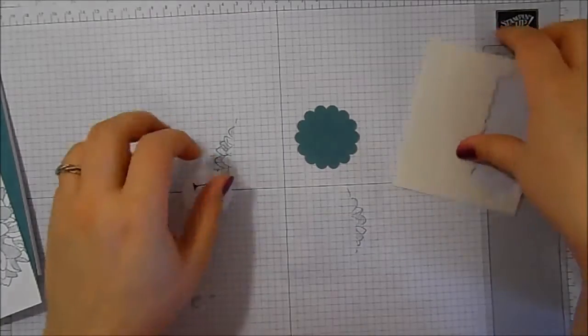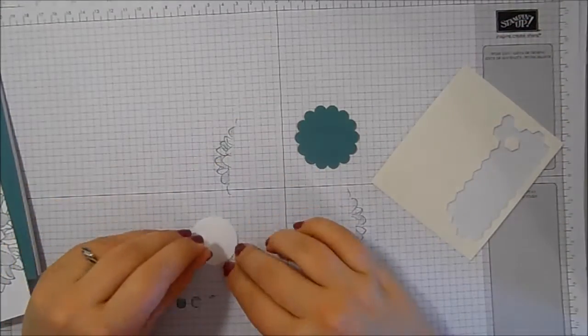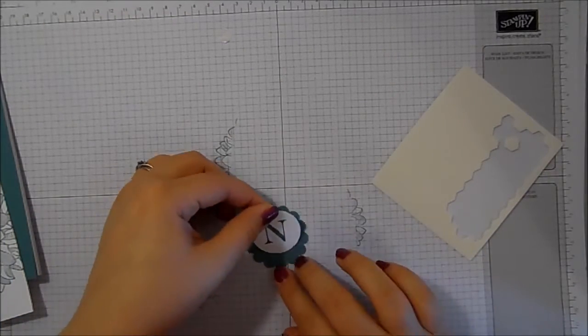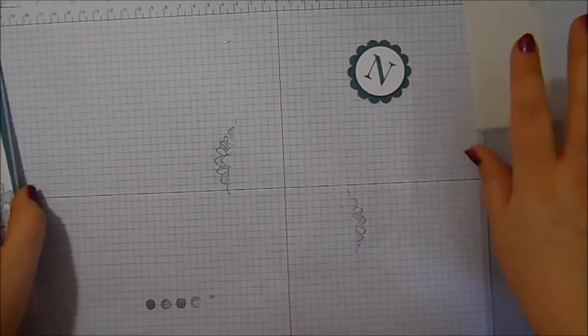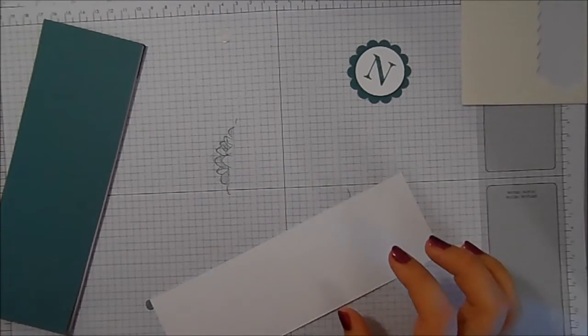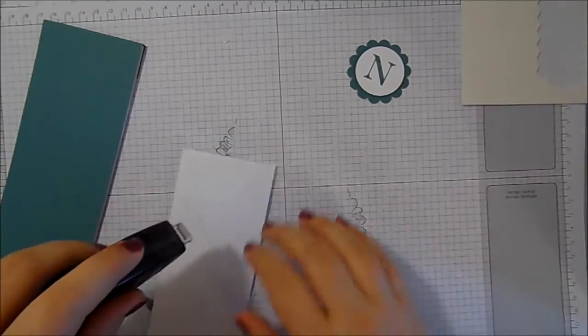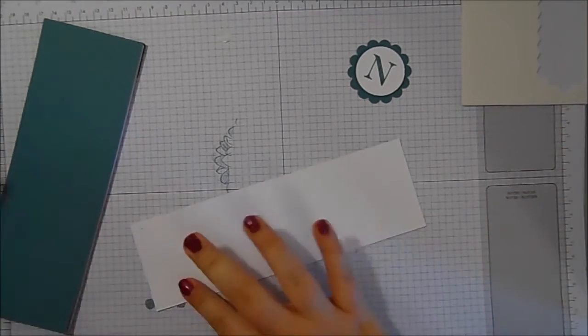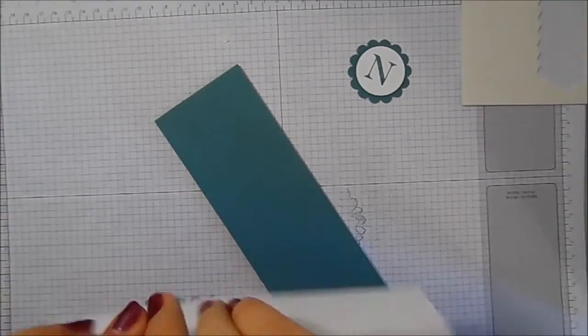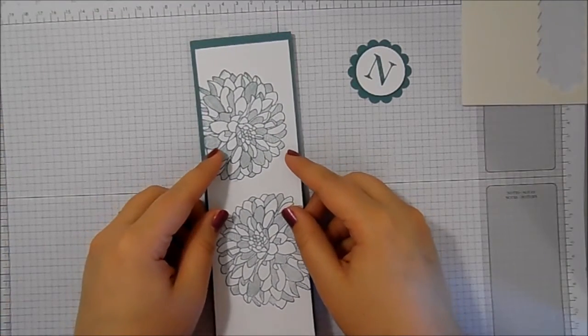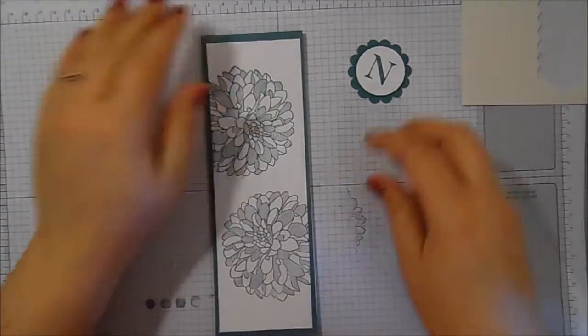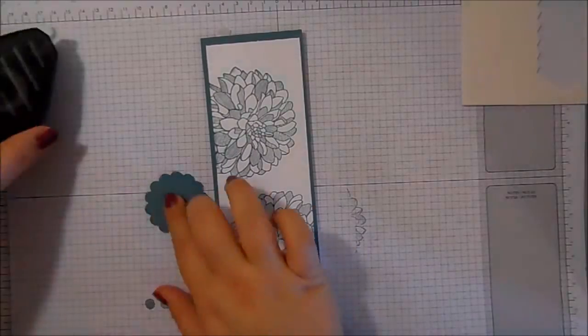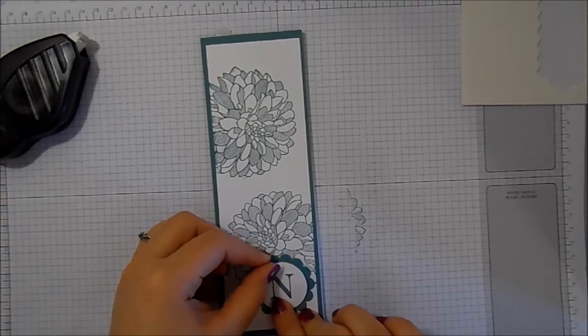And I'm just going to pop the N onto there with a dimensional. And then I've got some Fast Fuse to pop my piece of Whisper White onto the front of my notebook. So just like that. And then some more Fast Fuse on the back of my scallop circle. Just down there at the bottom.